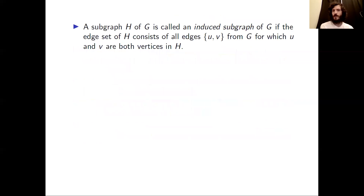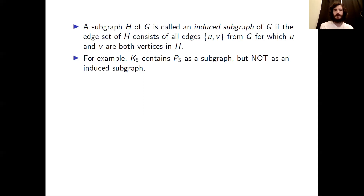Now we'll consider a special kind of subgraph called an induced subgraph. We say that a subgraph H of G is an induced subgraph if the edge set of H consists of all edges uv from G for which both u and v are vertices in H. For example, the complete graph K5 contains a P5 subgraph (the path on five vertices), but K5 does not contain P5 as an induced subgraph because it is missing edges.